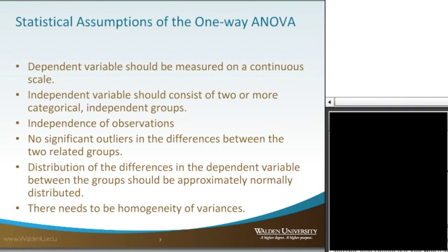The distribution of the differences in the dependent variable between the groups should be approximately normally distributed. When we plot the differences between the groups, you want to see that it actually makes somewhat of a normal distribution. And lastly, there needs to be homogeneity of variances between each of the groups. This is tested using Levene's test for homogeneity of variances.